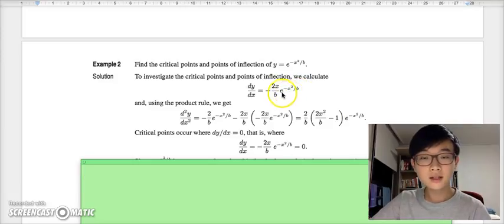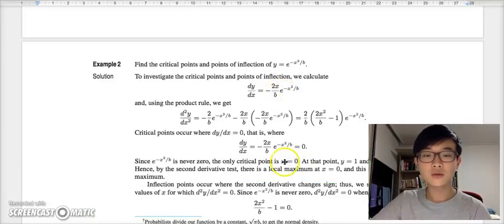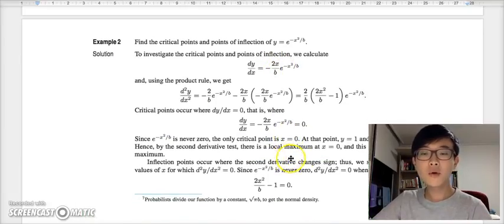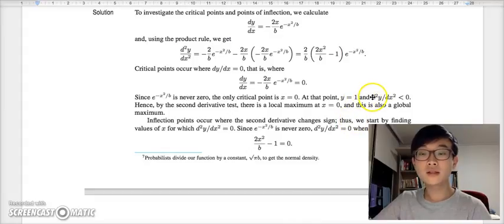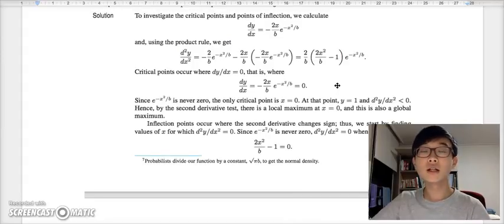Critical points occur only when this equals 0. Apparently, this always remains positive. So critical points only occur when x equals 0. At that point, y equals 1 and the second derivative is below 0. Therefore, the local maximum occurs at x equals 0, and this also is the global maximum as there exists only one critical point.